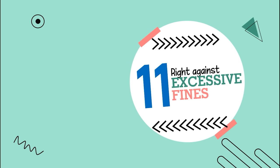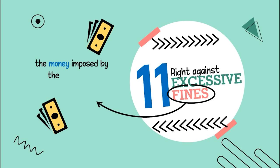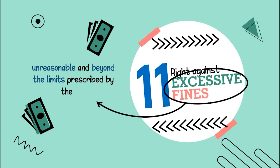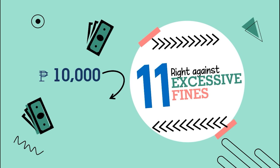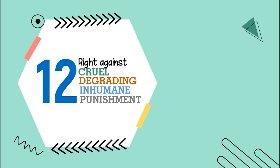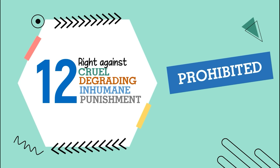Number eleven, the right against excessive fines. A fine is money imposed by the court as punishment for a crime. A fine is excessive when it is unreasonable and beyond the limits prescribed by the law — for example, a fine of 10,000 pesos for theft of 50 pesos is clearly excessive, and this is against the new constitution. Number twelve, the right against cruel, degrading, and inhumane punishment. Cruel punishment is prohibited — like cutting off fingers or cutting the penis of a rapist.